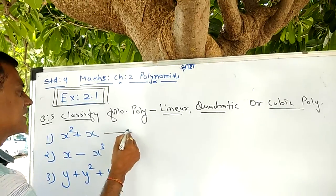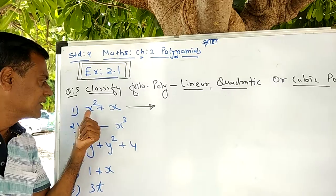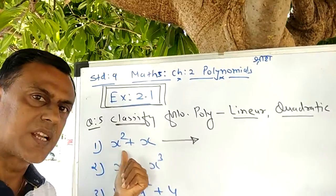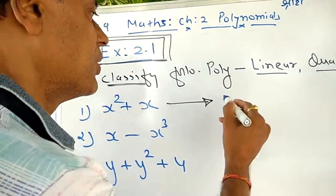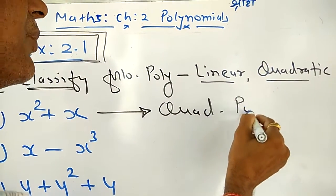First example, first question: x² + x. In this polynomial, the highest power, highest exponent of this polynomial is 2. Therefore, this is quadratic polynomial.